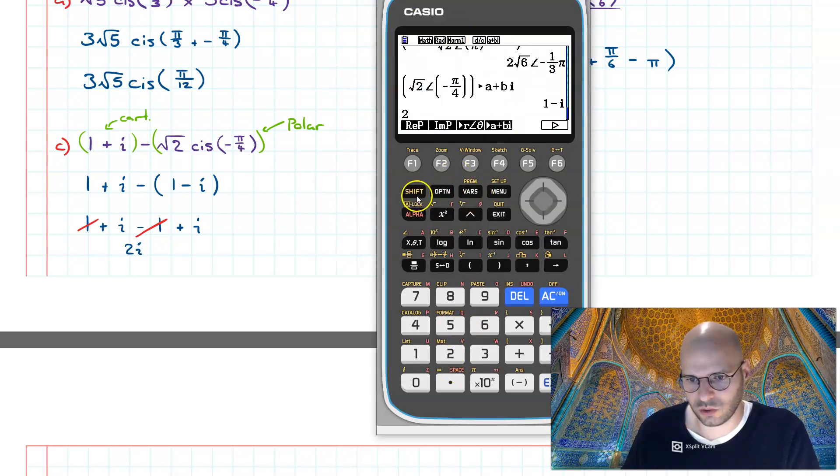And 2i can be rewritten as... I'll simply go shift i, I want this in polar form, and as you can see it's going to be 2 with an angle of half pi.